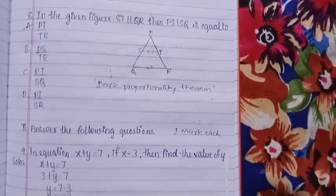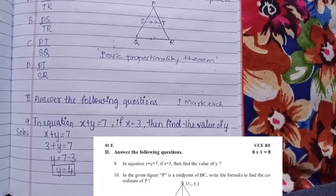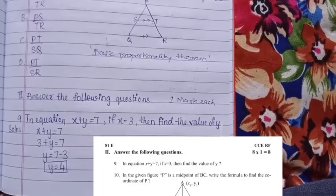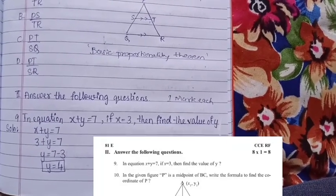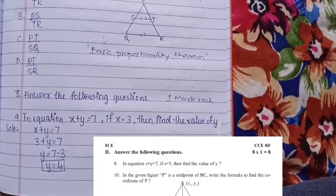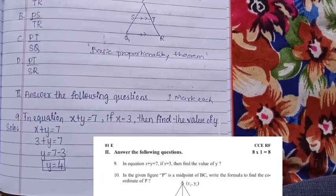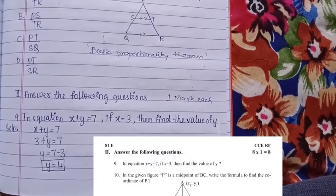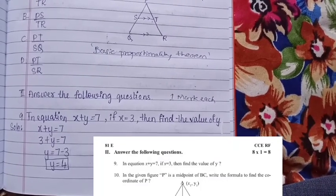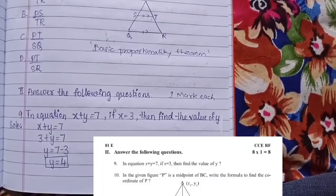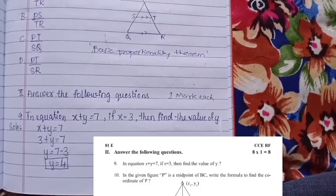Answer the following questions — they carry one mark. In the equation x + y = 7, if x = 3, find the value of y. Substituting: 3 + y = 7, so y = 7 − 3 = 4. Therefore the value of y is 4.